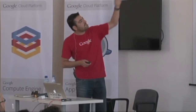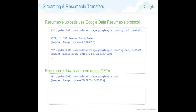With resumable upload, you can see code snippets showing how it works — you set which range you want to upload or download within a file. Because we're talking about large files, you don't want to re-download or re-upload the full file; you can update or download just a specific part.